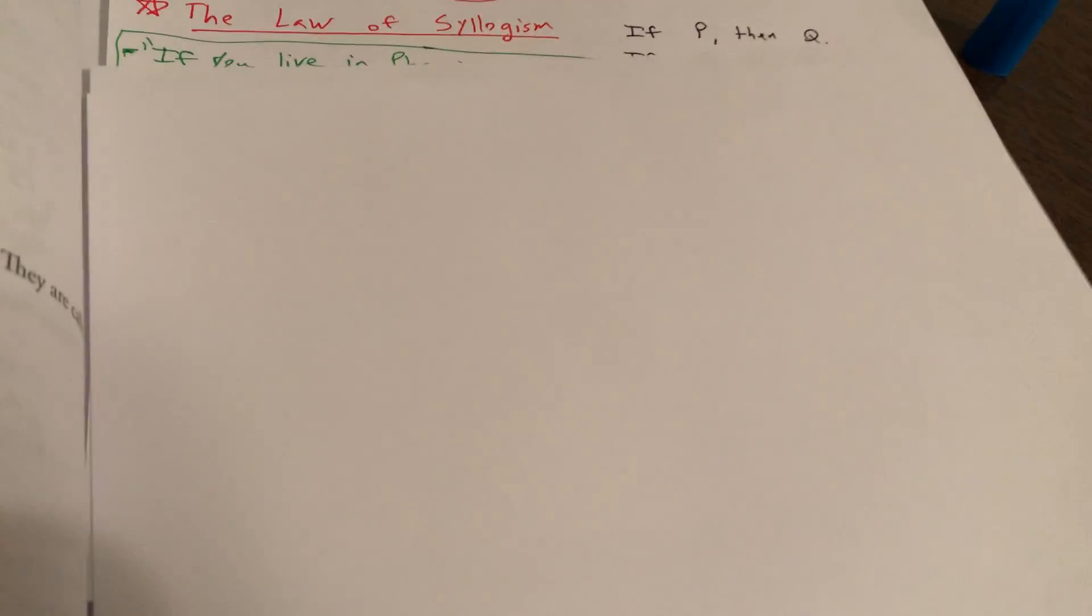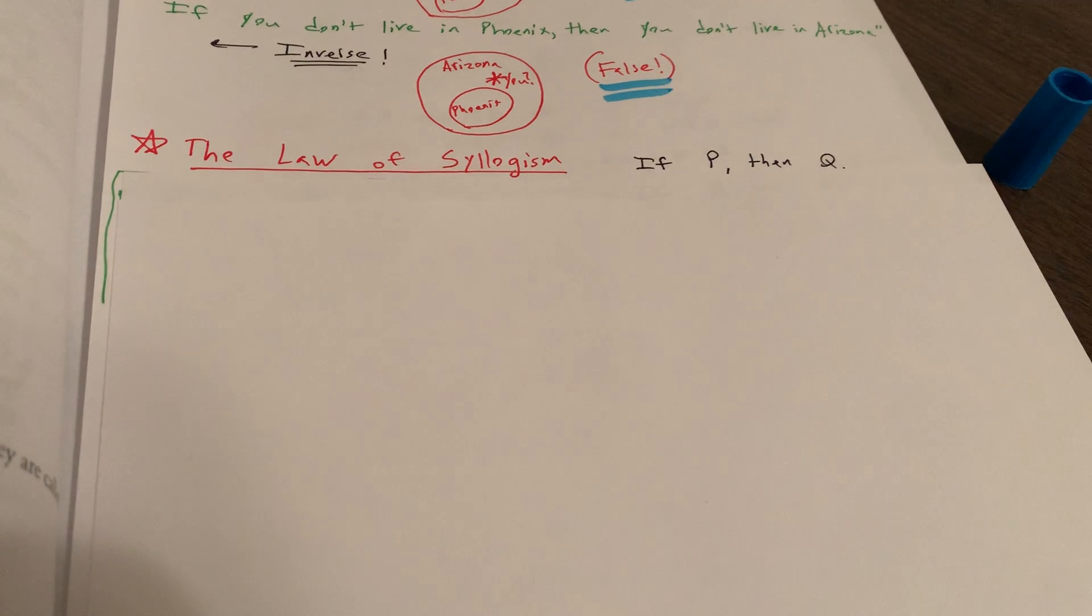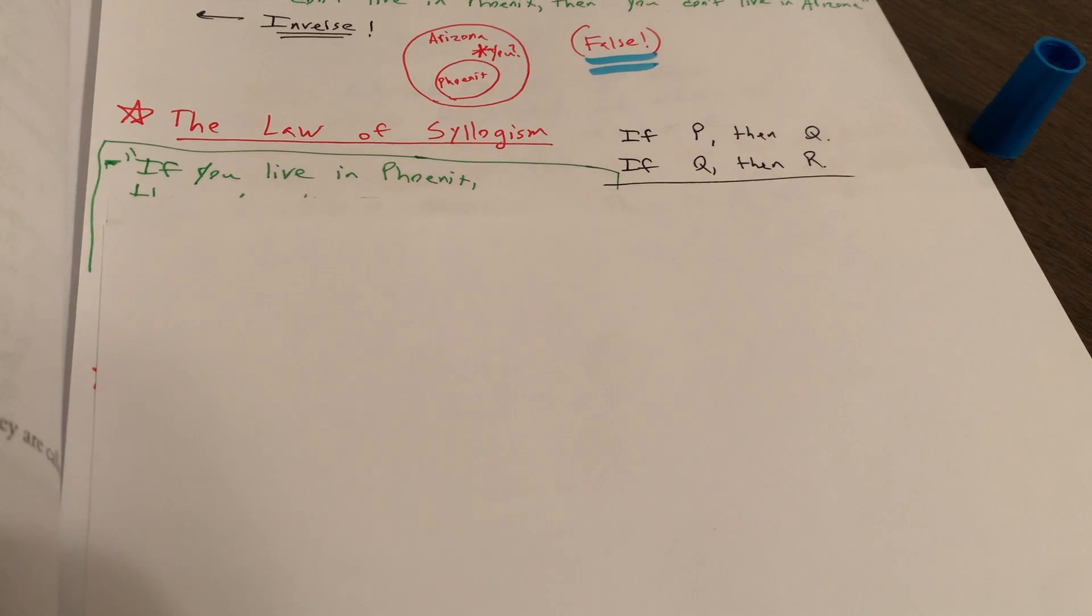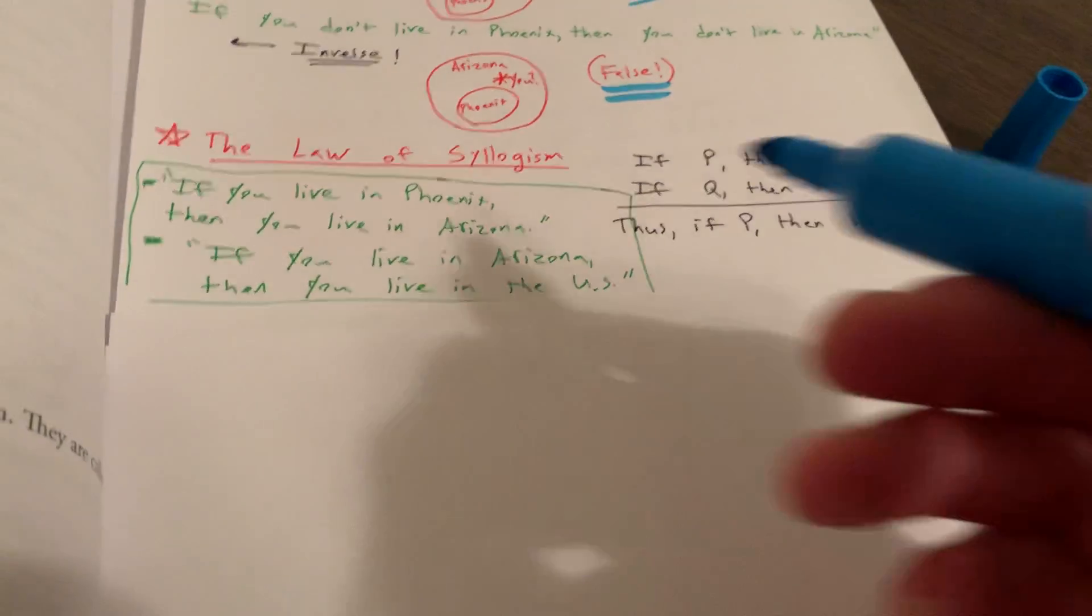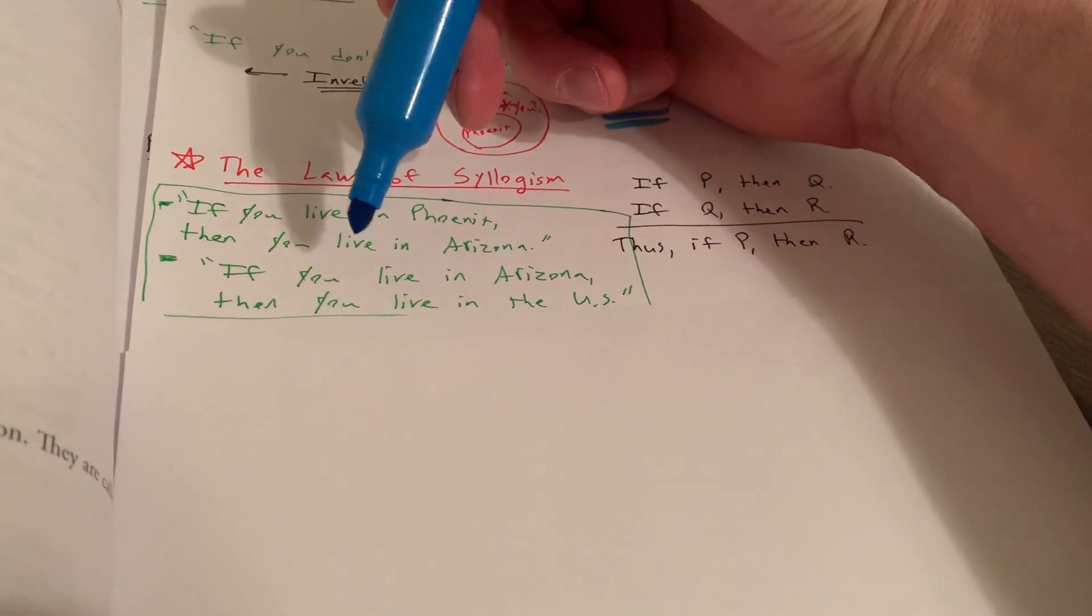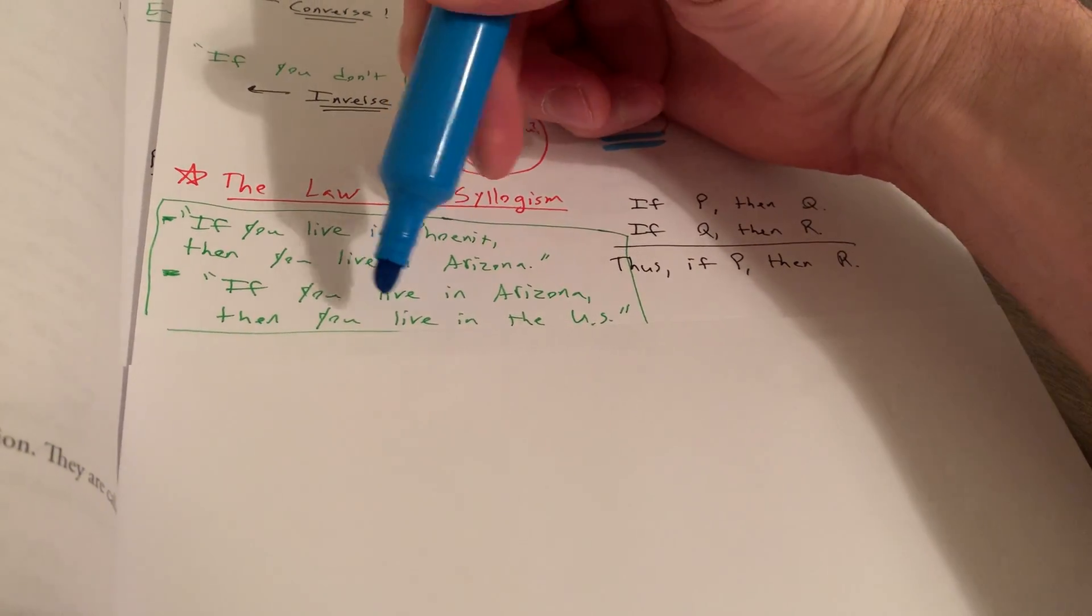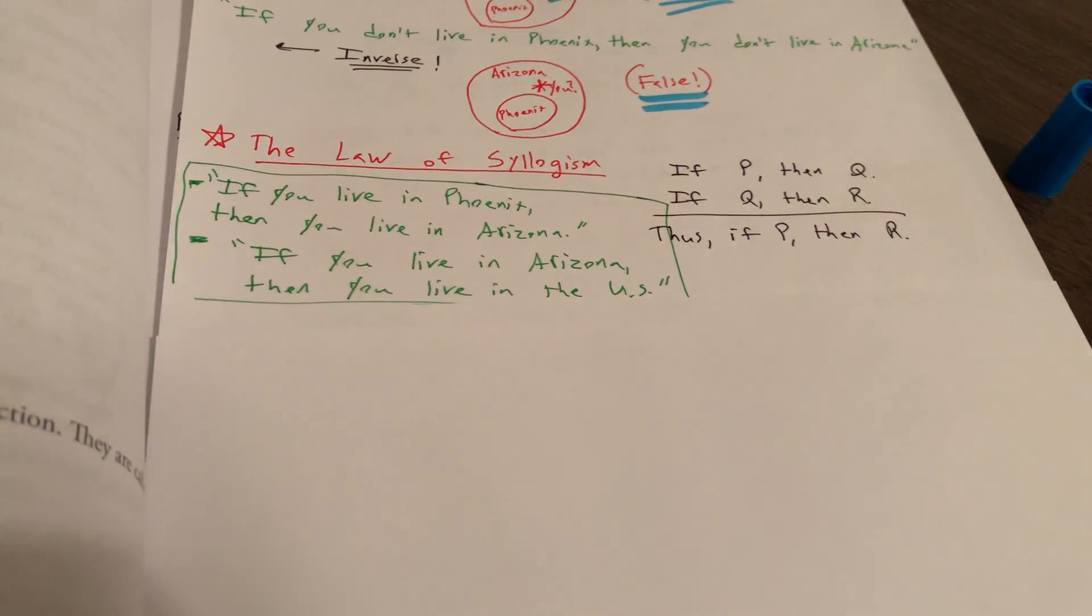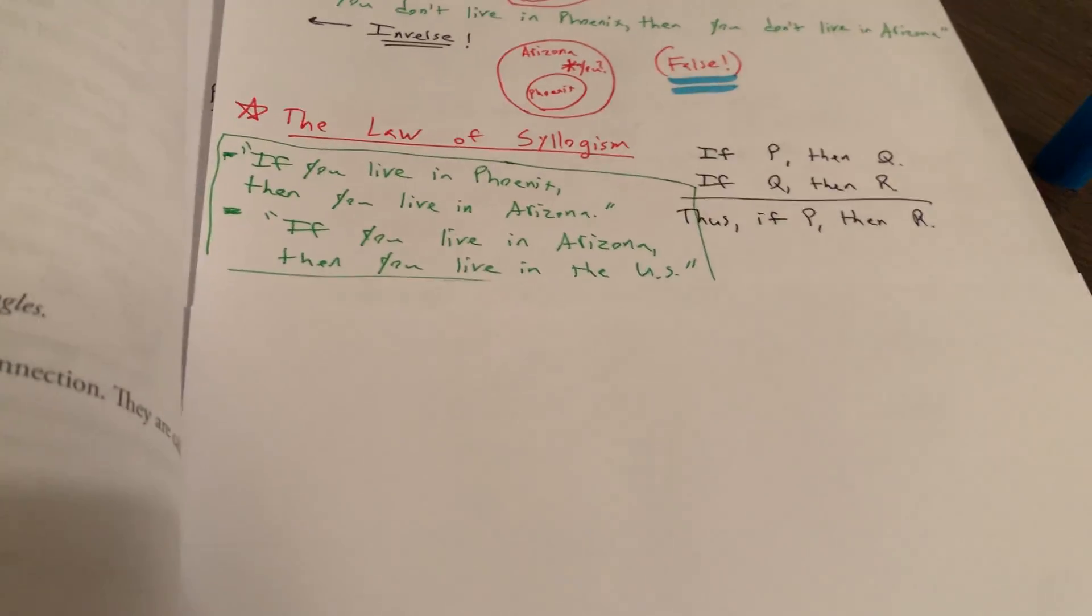Then we have the so-called law of the syllogism. I don't like this terminology in some ways, but in geometry high school courses, they use this often. So if P, then Q. If Q, then R. So thus, if P, then R. So, for example, if you live in Phoenix, then you live in Arizona. If you live in Arizona, you live in the U.S. So, therefore, if you live in Phoenix, you live in the U.S. So we have a chain of conditional if-then statements there.